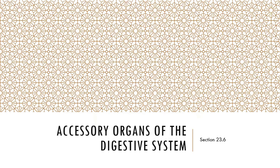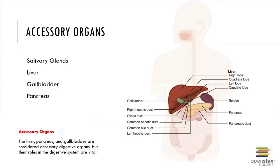Now we look at the accessory organs. We've looked at the entire alimentary canal, and now we're moving into the accessory organs. Those are the salivary glands, the liver, the gallbladder, and the pancreas.